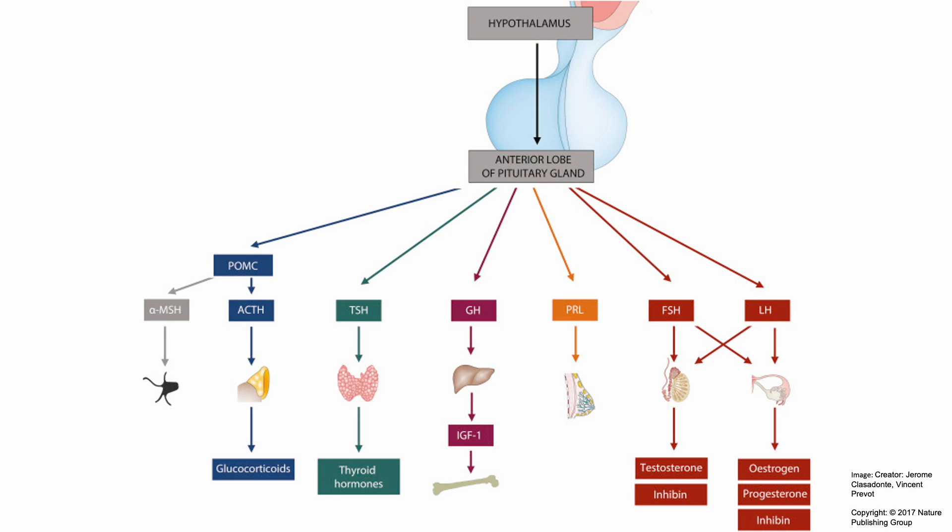The hypothalamus pituitary axis is a complex system that plays a vital role in regulating many physiological functions in our body. The HPA, HPT, and HPG axes are just a few examples of the many axes that make up this system. Understanding how these axes work can help us better understand how our bodies function and can inform medical treatments of various conditions.